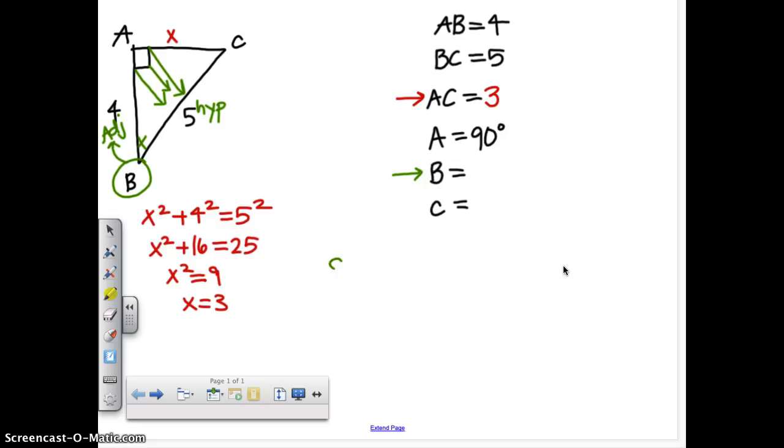So we're going to do cosine of the angle. In this case, the angle is B. Cosine of B, adjacent over hypotenuse. The adjacent side is 4. The hypotenuse is 5. Love it. It looks so good.